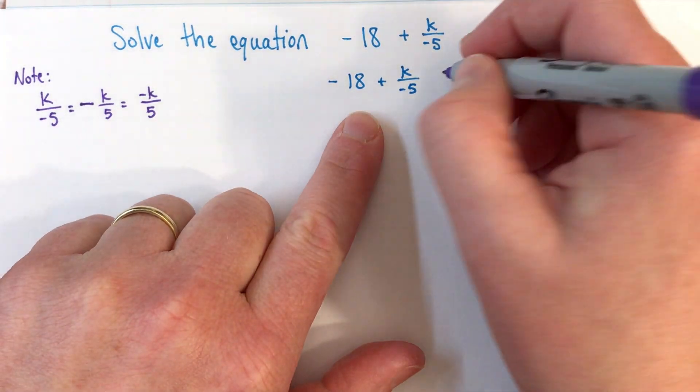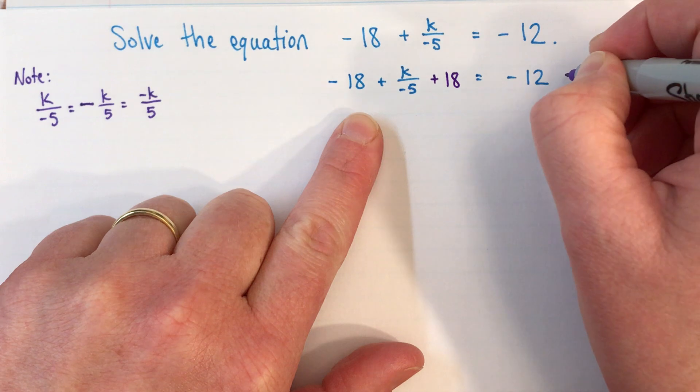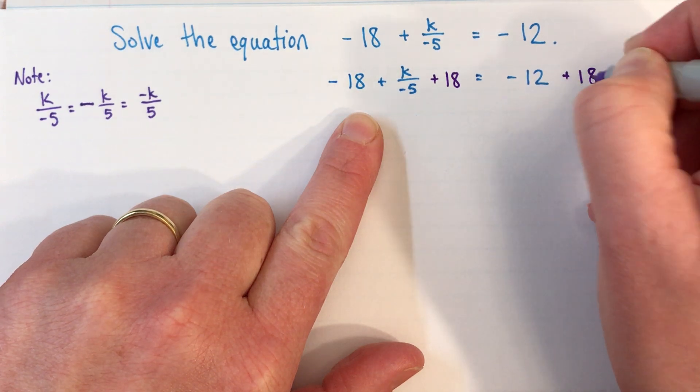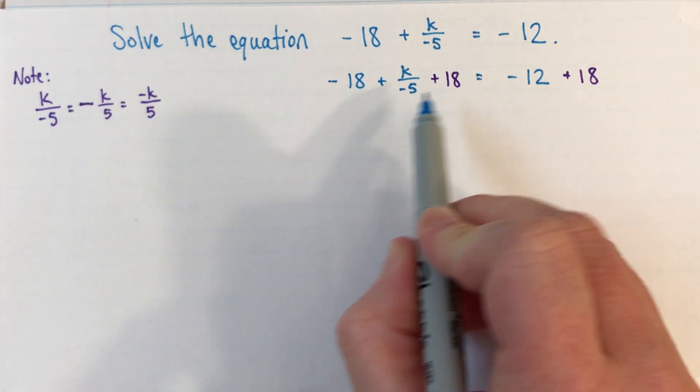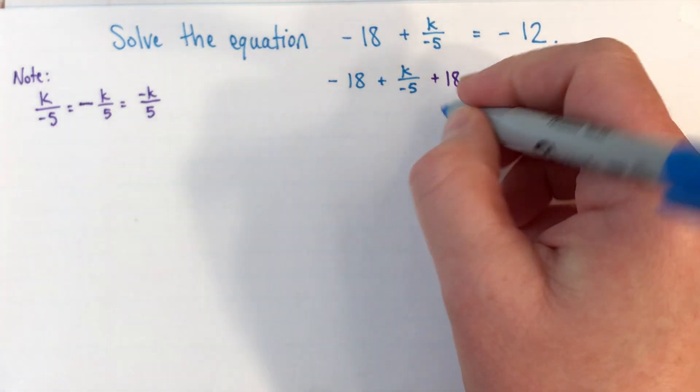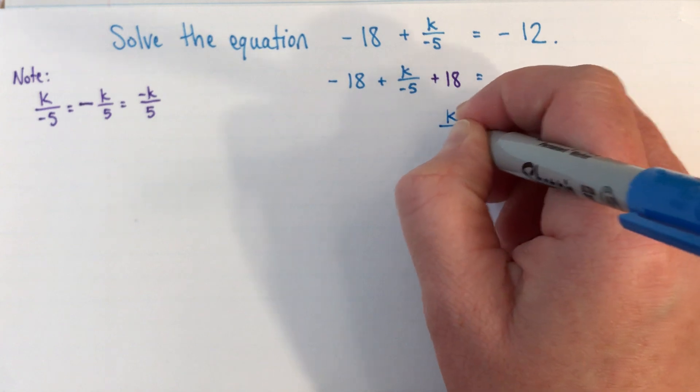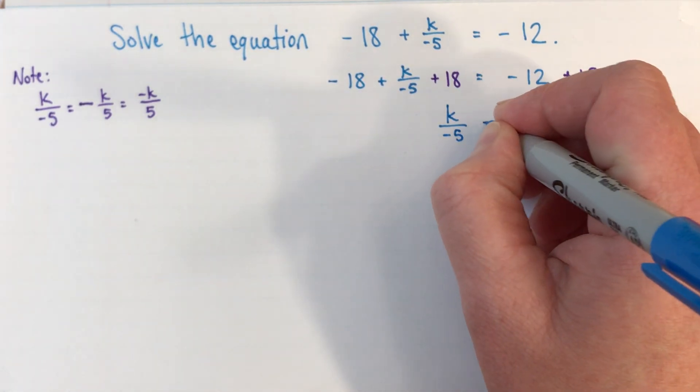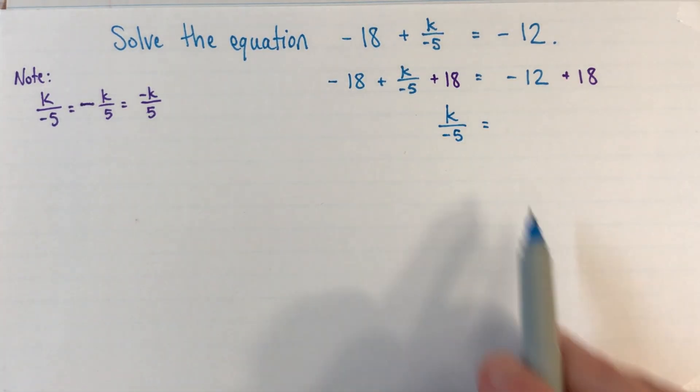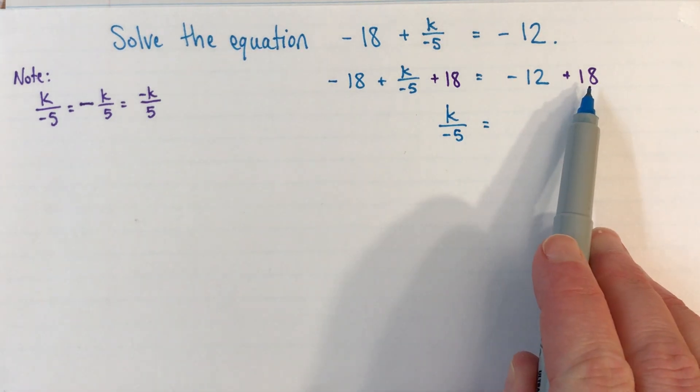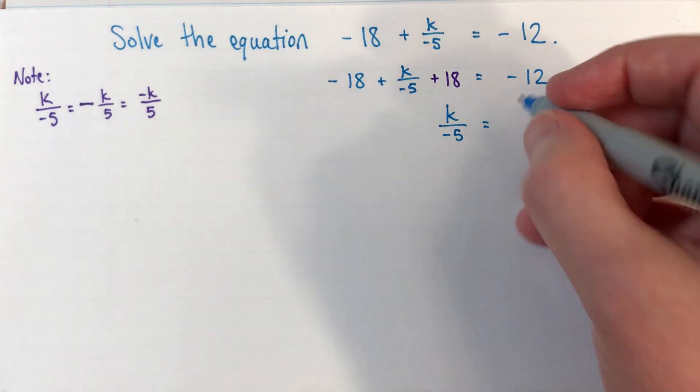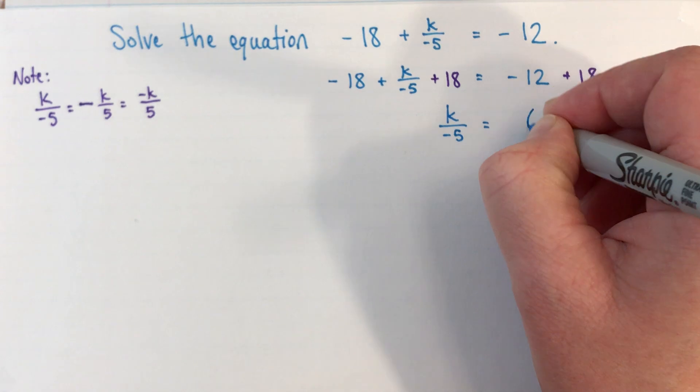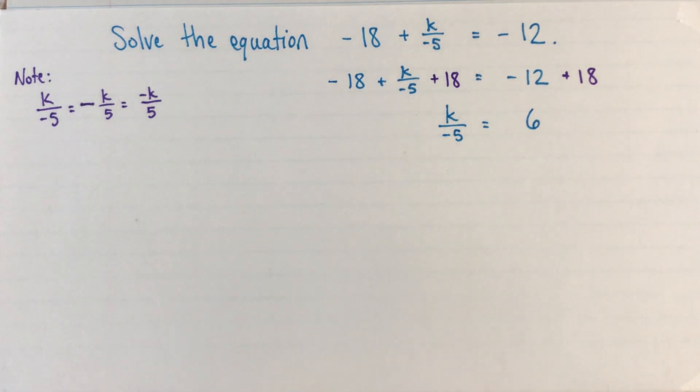And then I'll add positive 18 to both sides. So -18 + 18, that's 0. That's why I did that. So on the left side, we just have k/(-5). And on the right side, -12 + 18. I'm imagining a number line here, a little bit left of 0, and then I go up a little bit right of 0. So I'm at positive 6.